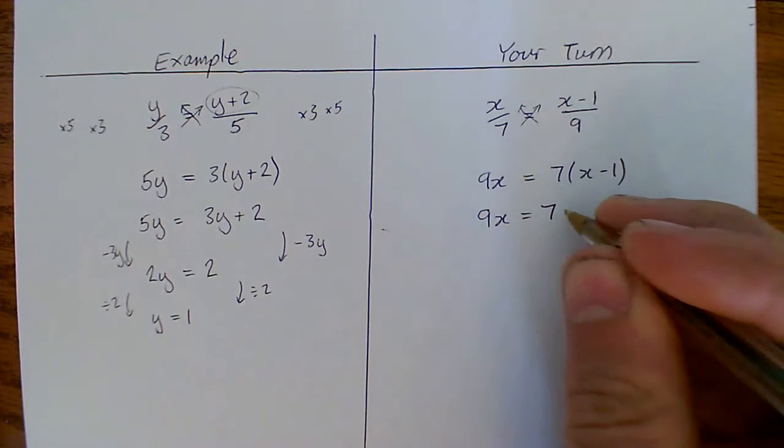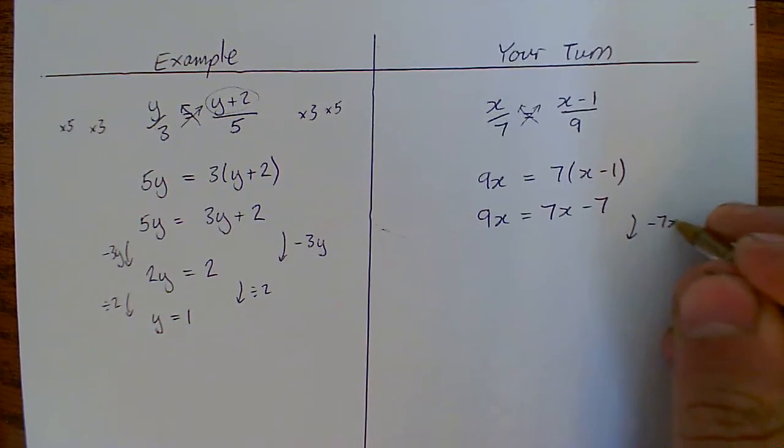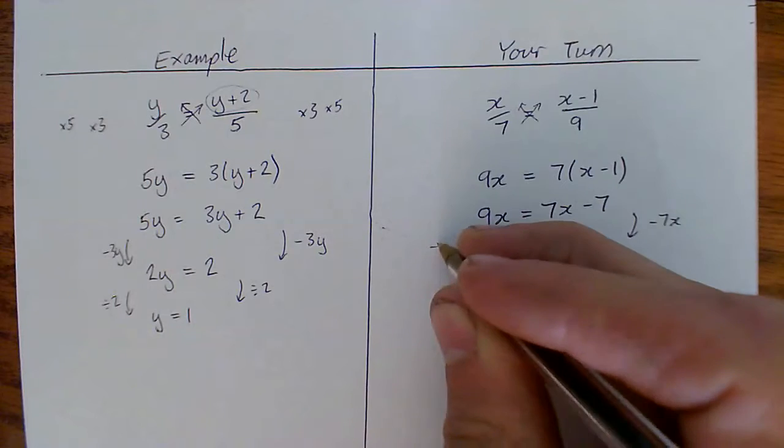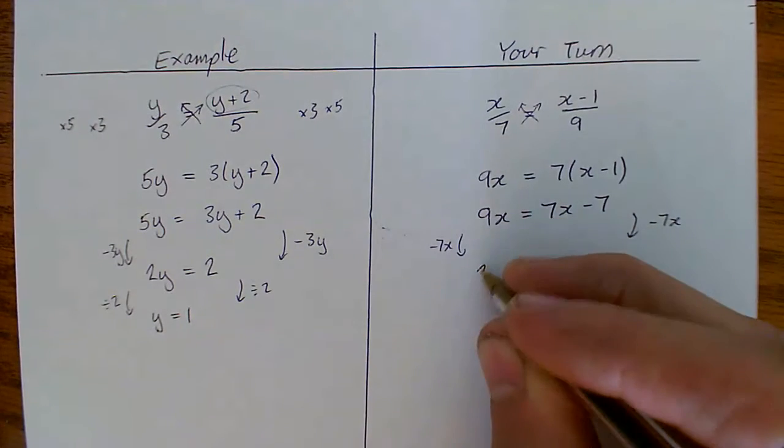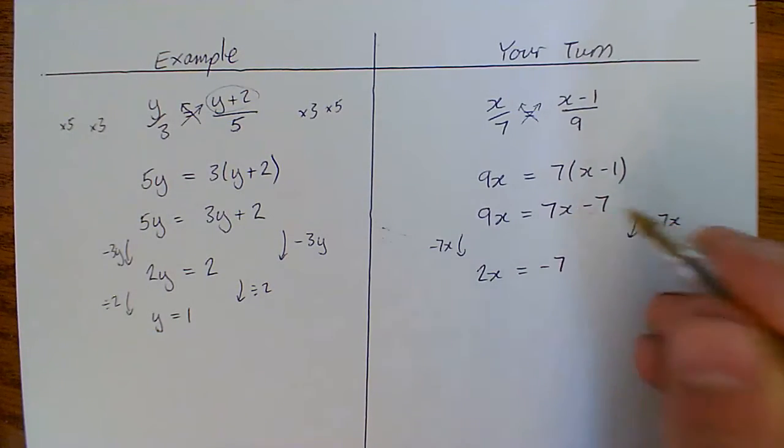So we end up with 9x equals 7x minus 7. Let's take away 7x from both sides. So we end up with 2x equals minus 7. Be careful not to lose that minus sign.